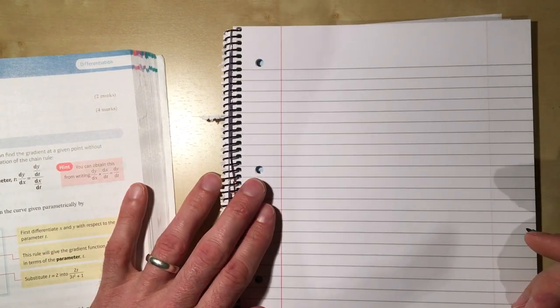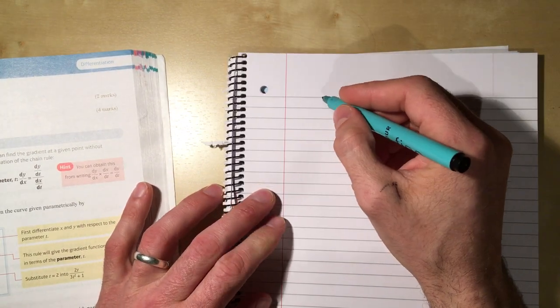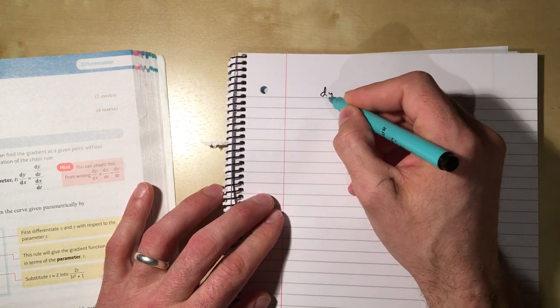So section 9.7, we're dealing with parametric differentiation. Before we start thinking about parametrics, let's just remind ourselves of the chain rule.